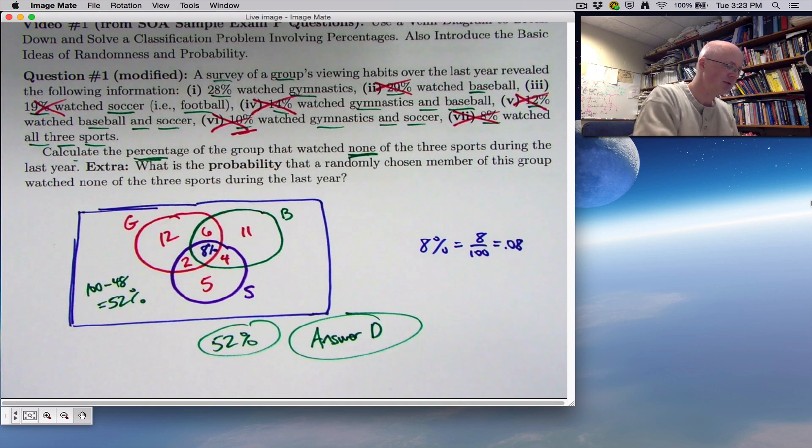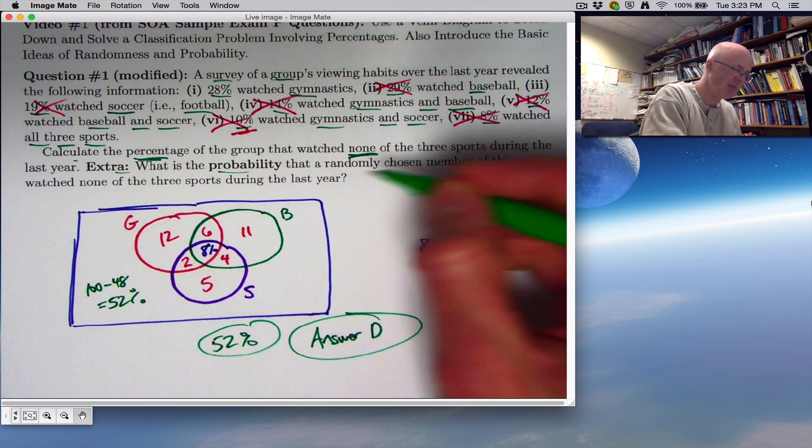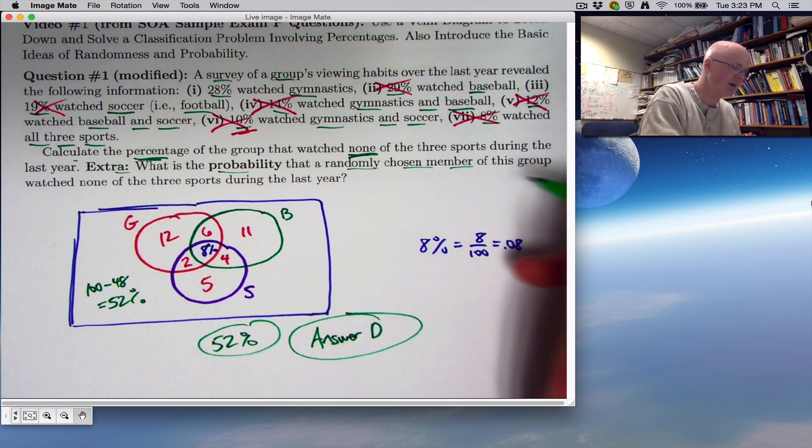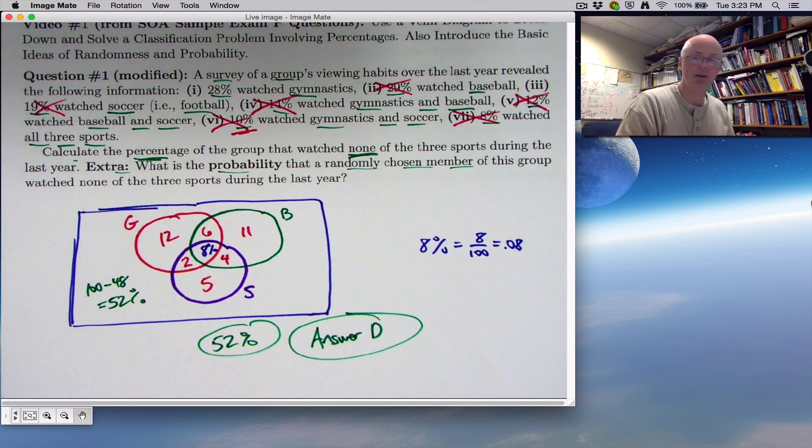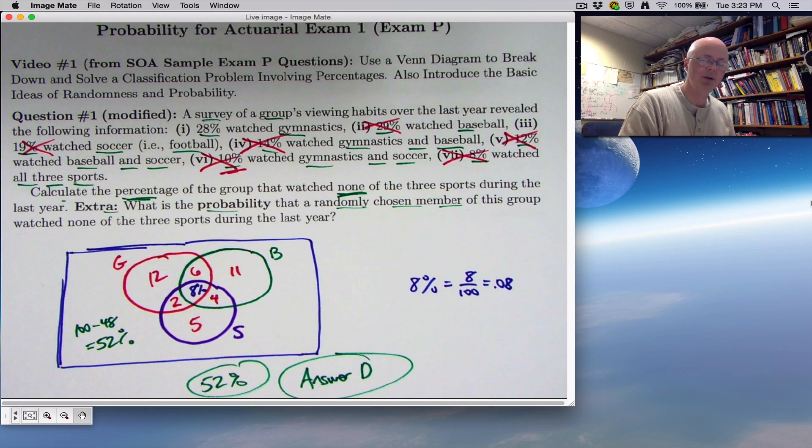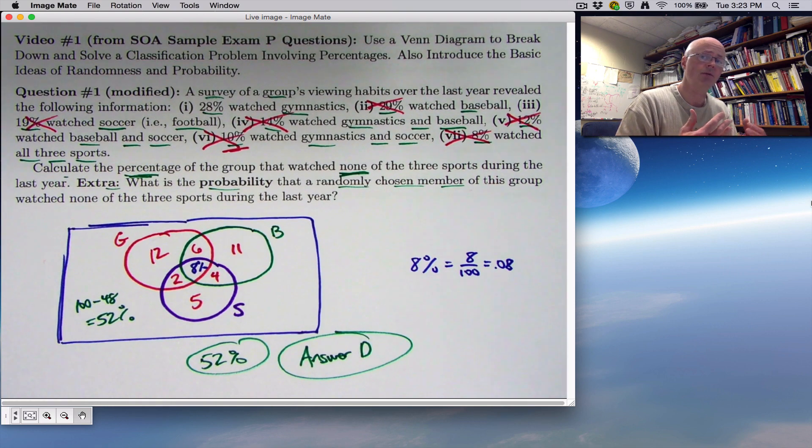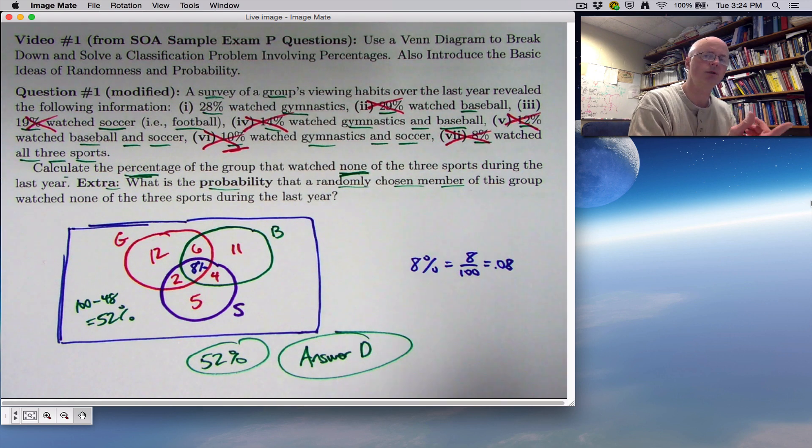And that indeed is also the answer to the extra question: what is the probability that a randomly chosen member of this group watched none of the three sports during the last year? What's the distinction between percentage and probability? Well, nothing in terms of the answer. However, there is a difference in perspective. When you talk about probability, where you are assessing the likelihood or chances of something happening, you don't know if it's happened or not. You're not just describing some data.